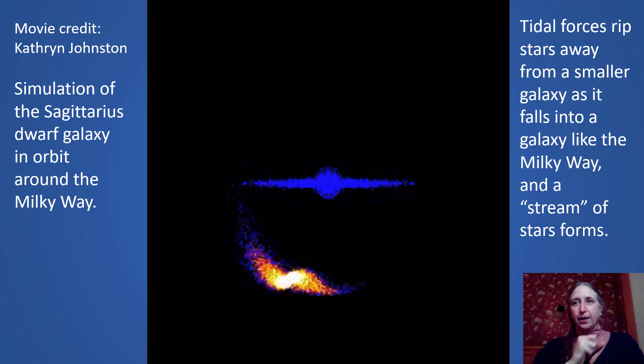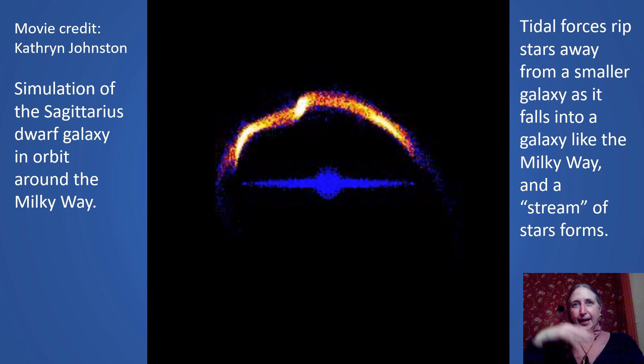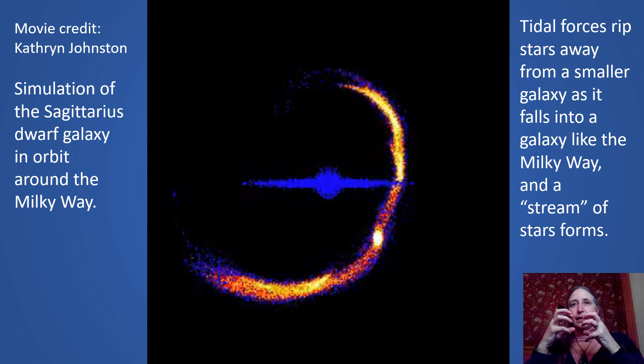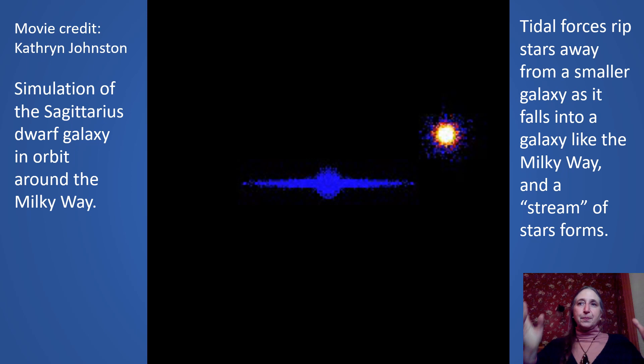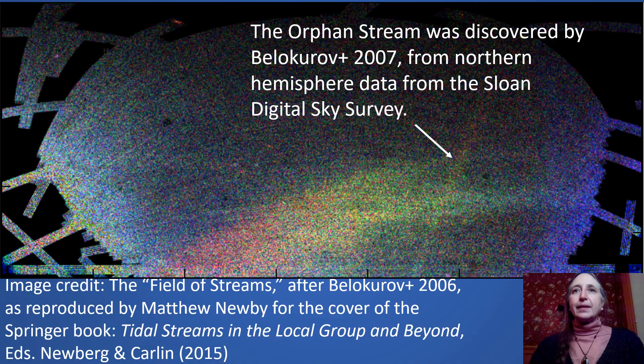This video shows a dwarf galaxy — in this case the Sagittarius dwarf galaxy — that is in orbit around the Milky Way, represented as that blue disk you're seeing on edge at the center. As the dwarf galaxy goes around, the Milky Way pulls harder on the part that's closer and less hard on the part that's farther away, so it stretches the dwarf galaxy and pulls the stars off. When the stars are pulled off, they start orbiting the Milky Way — some get pulled ahead and some get pulled behind — and you get this big stream of stars, which can circle all the way around the Milky Way galaxy.